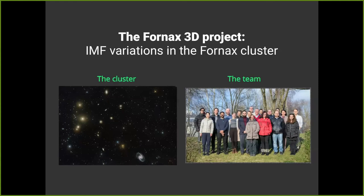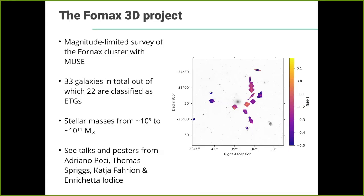That is the background when we started the IMF side of the F3D project. The F3D is a survey with MUSE of the Fornax cluster, and it is a magnitude-limited survey with 33 galaxies, some of them observed with even three pointings. Twenty-two of those galaxies are classified as early types, so we can use the single stellar population analysis approach, with stellar masses ranging from 10^9 to 10^11 solar masses.